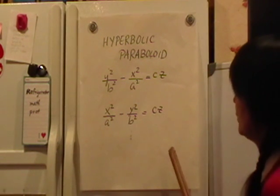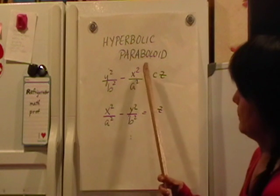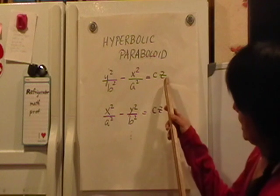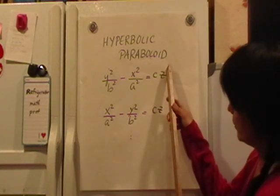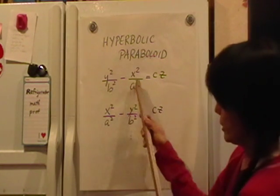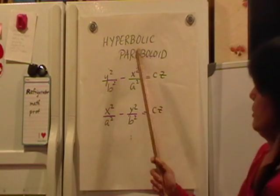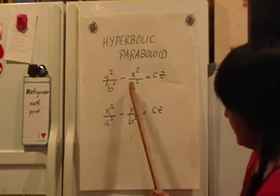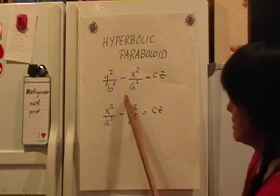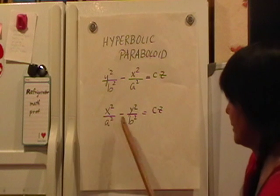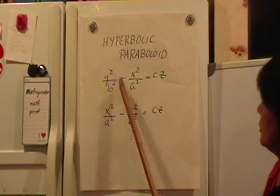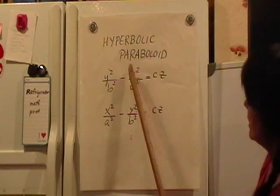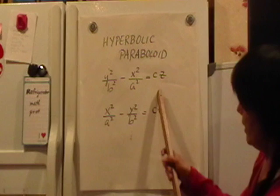The last quadratic surface we're going to sketch is the hyperbolic paraboloid. It has one term that is degree one and the others are degree two. The paraboloid will have plus signs in between, but for a hyperbolic paraboloid you need to see a hyperbola, so we have minuses.